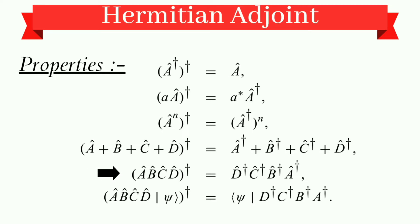And if we talk about multiplication, if we multiply the operators and then take its adjoint like A, B, C, D whole to the power dagger, then it will give us a reverse series: D dagger, C dagger, B dagger, and A dagger.